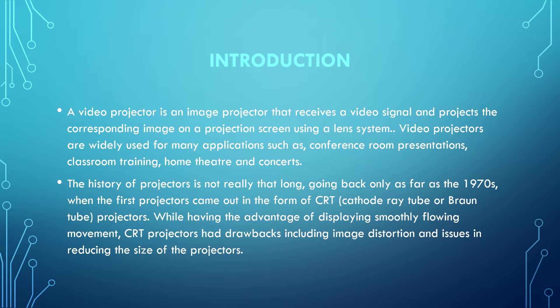As we can see, the history of projectors is not really that long, going back only as far as the 1970s when the first projectors came out in the form of CRT projectors, which were known as cathode ray tube or brown tube. While having the advantage of displaying smoothly flowing movement, CRT projectors had drawbacks including image distortion and issues in reducing the size of the projectors.